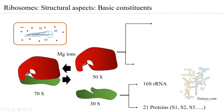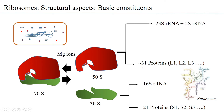The 30S is made up of 16S rRNA and 21 proteins. The 50S has a larger number of proteins — about 31 proteins — each labeled as L1, L2, L3, since they belong to the large subunit. The L and S designations differentiate between proteins of the small and large subunits. Along with the 31 proteins, the 50S has two ribosomal RNAs: the 23S ribosomal RNA, which is larger in size compared to 16S rRNA, and an additional 5S rRNA. Together, these contribute to the structural stability of the 50S.